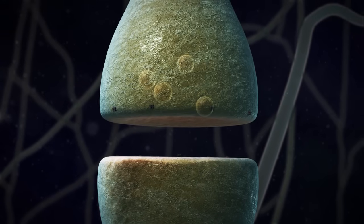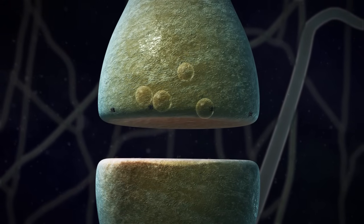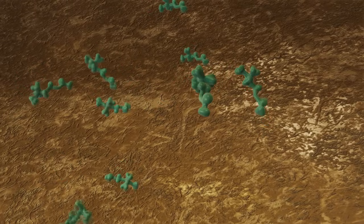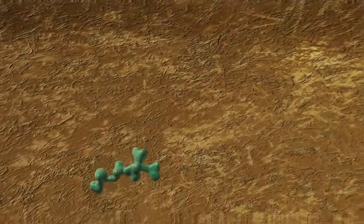The influx of calcium ions prompts synaptic vesicles to release neurotransmitters via exocytosis. This neuron is releasing acetylcholine.